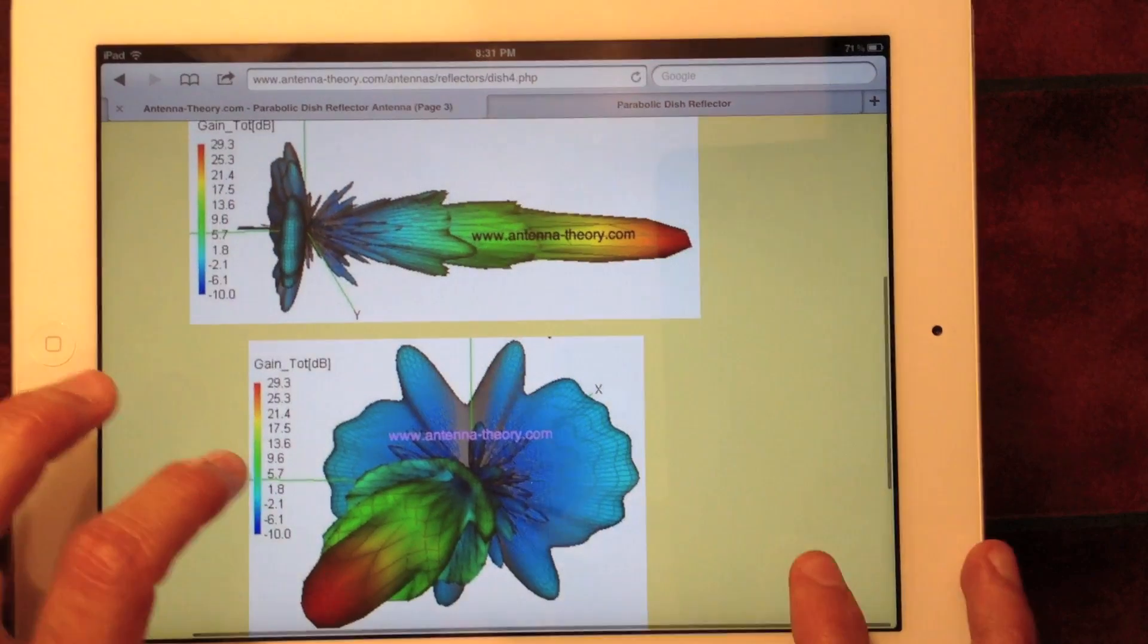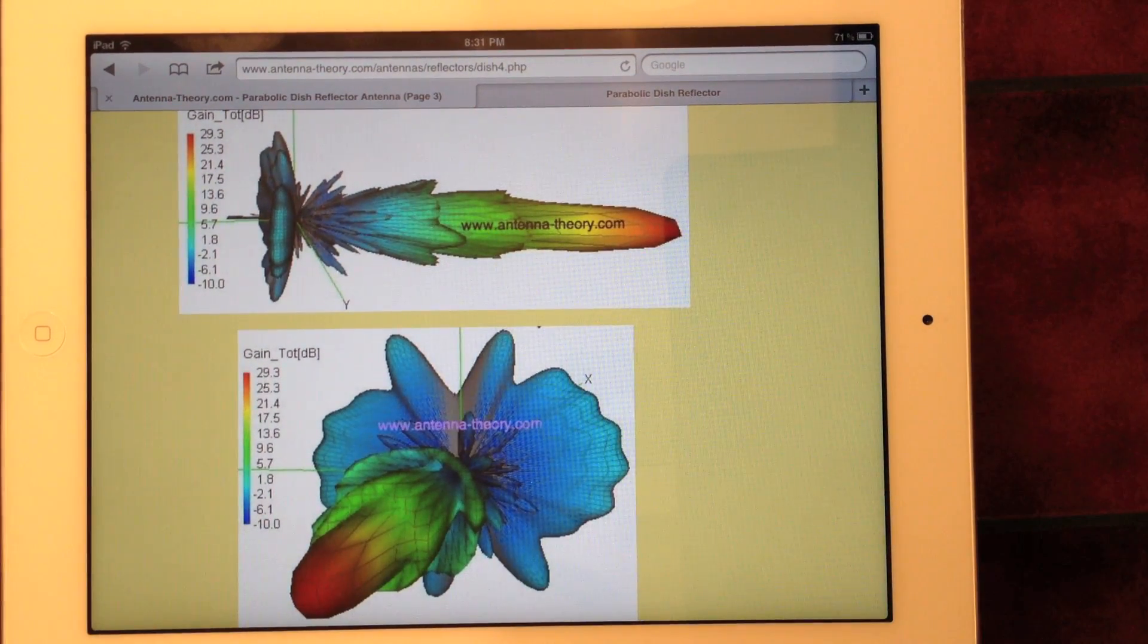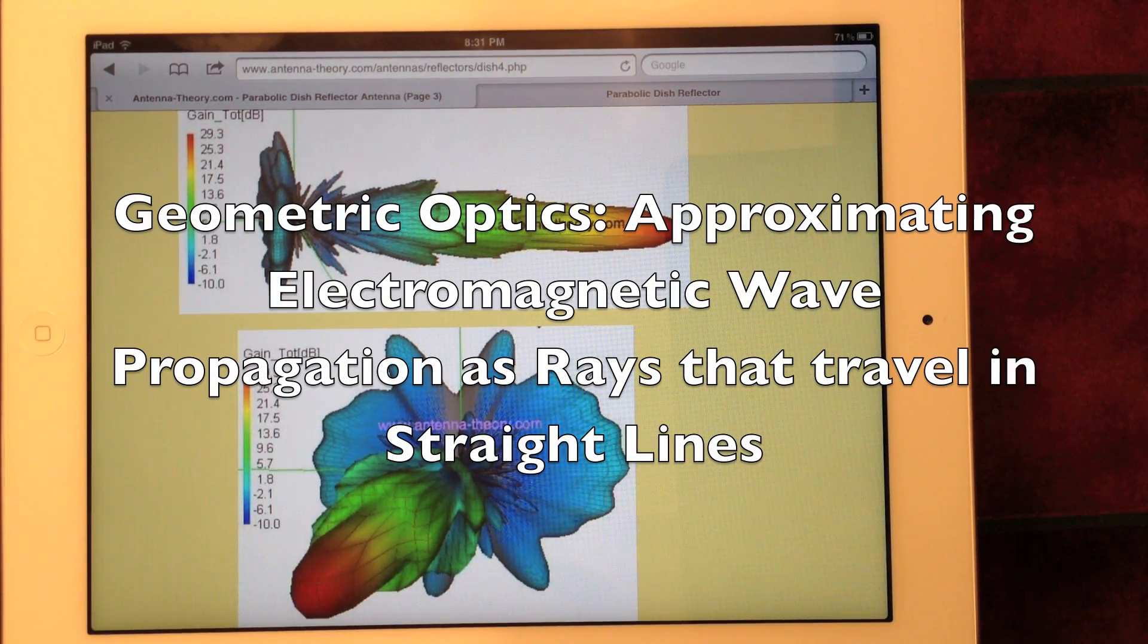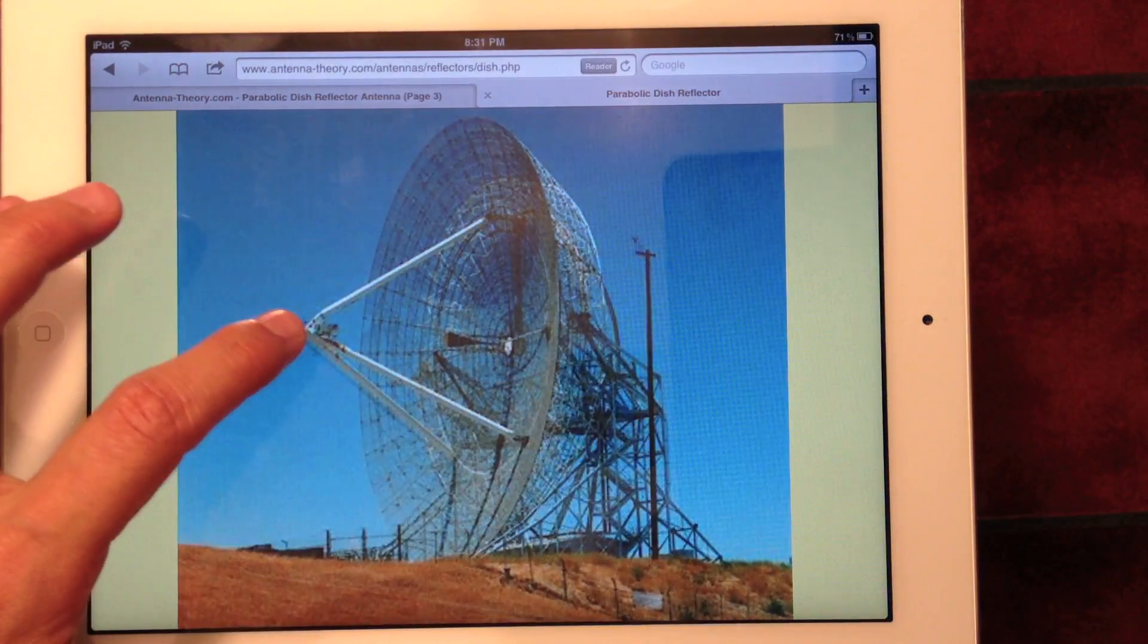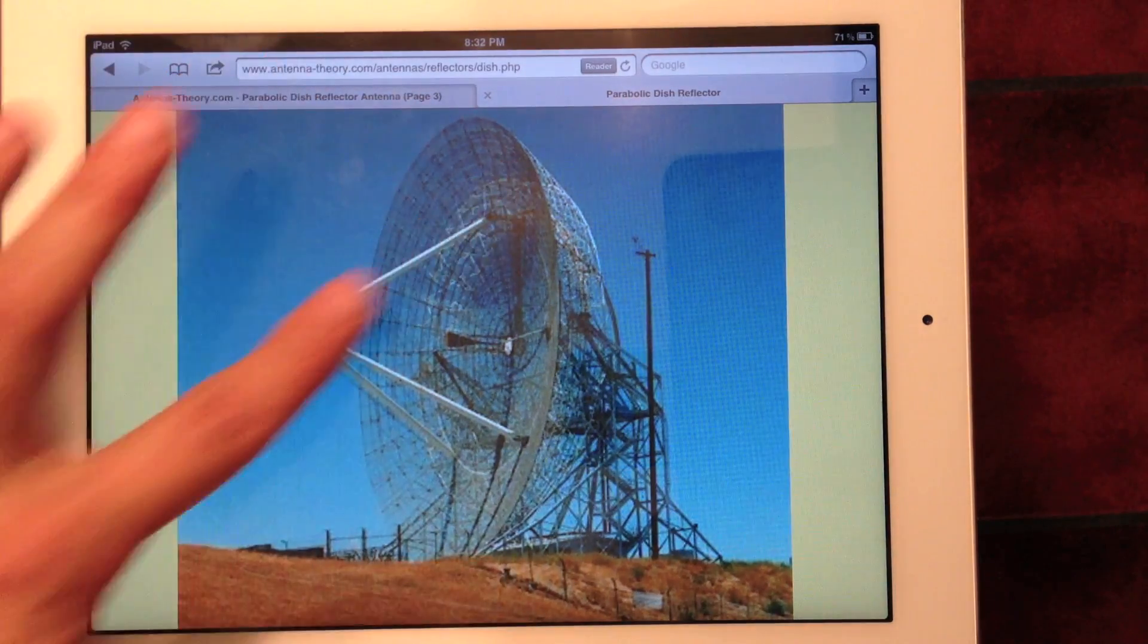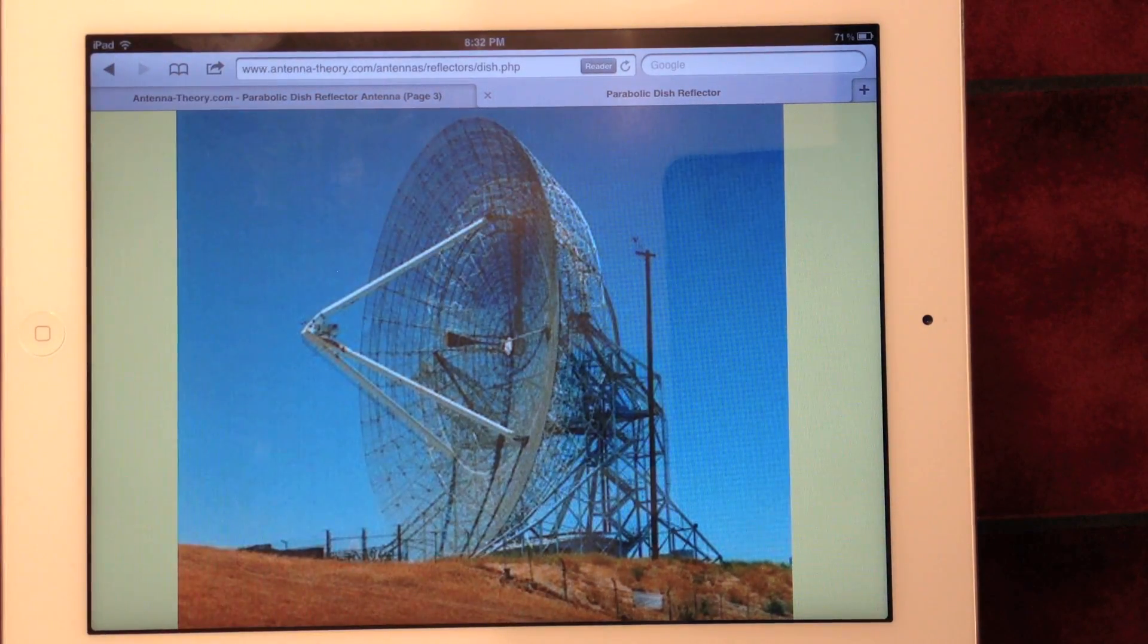So the good news about discussing very large antennas is it becomes okay to make mathematical approximations or simplifications that aren't going to alter the results. So in this case we're able to discuss the antennas in terms of geometric optics, which means we can think about rays. The electromagnetics is simply just rays that travel in straight lines and are reflected and go off in straight lines.